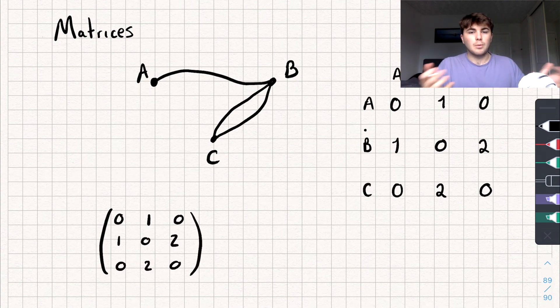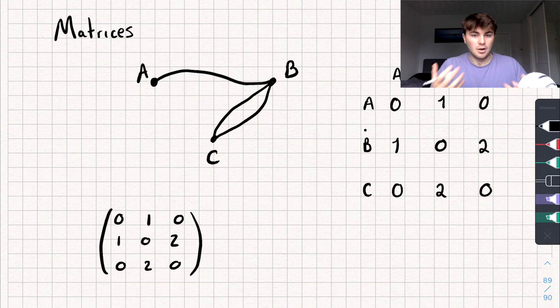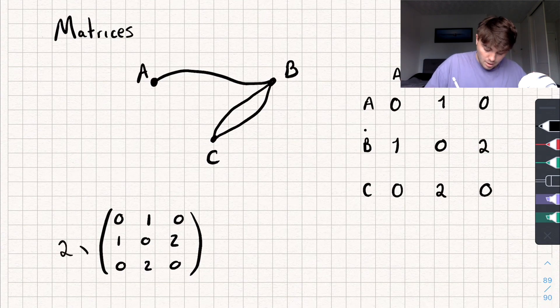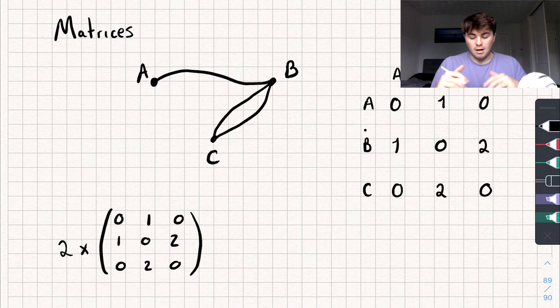Now you might be thinking, why would I bother doing that when I could just keep it in a table? Well, this is quite a basic example, but once I've put it into a matrix, I can start to do calculations with it. So say I wanted to double the number of connections between each town. Well, I could just times this matrix by two.